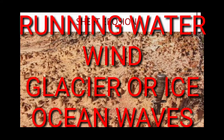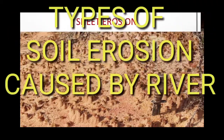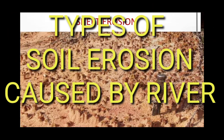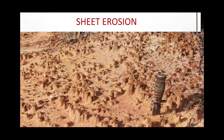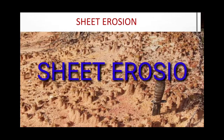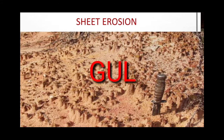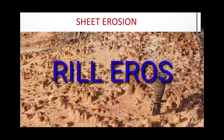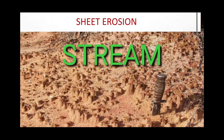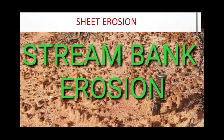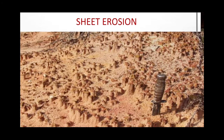Now we will see the types of soil erosion. It is mainly caused by running water, and the types are sheet erosion, gully erosion, rill erosion, and stream bank erosion. Let's start with soil erosion by running water.